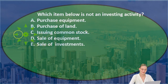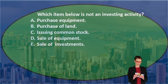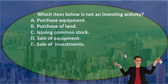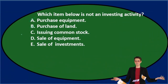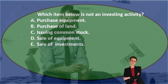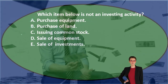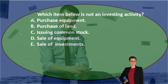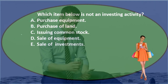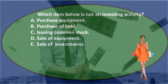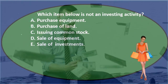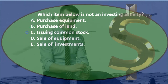C. Issuing common stock. The journal entry would be a debit to cash and a credit to common stock, possibly with additional paid-in capital. There's no income statement account — no revenue or expense. We're not buying anything; we're issuing stock and receiving cash. Therefore it's not investing — it looks like a financing activity, and that is not an investing activity. So C looks good.